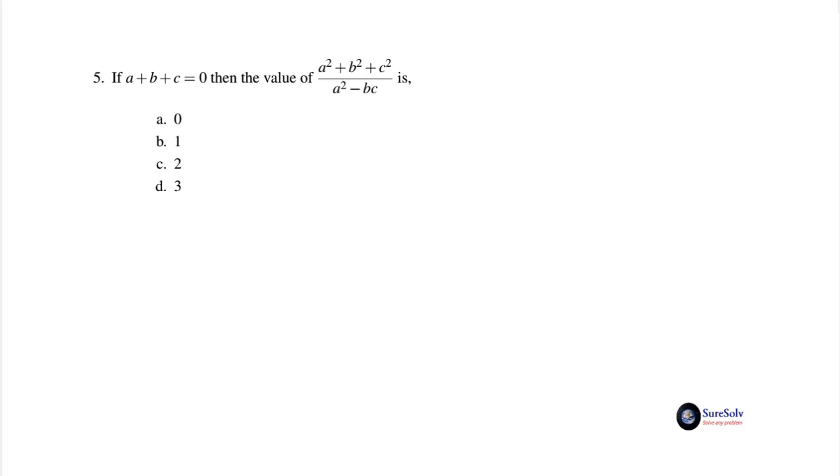The fifth problem is: if a + b + c = 0, then the value of (a² + b² + c²)/(a² - bc) is: option a) 0, option b) 1, option c) 2, and option d) 3. It's clear that by using the given equation, we have to convert the numerator of the target expression to a factor of a² - bc.